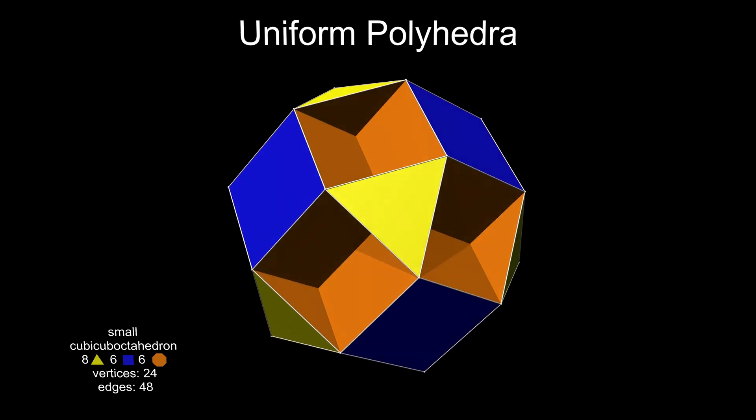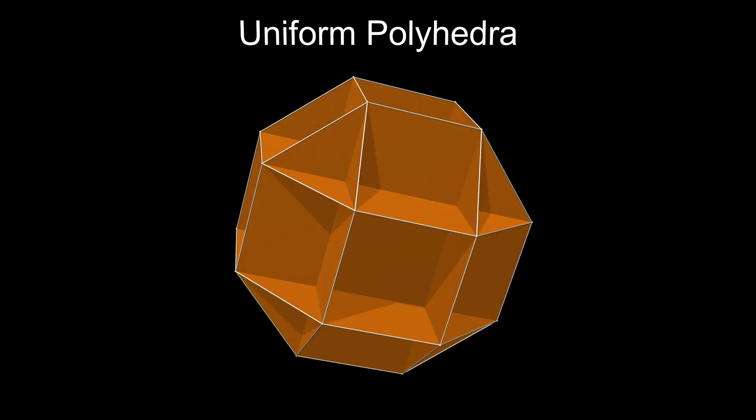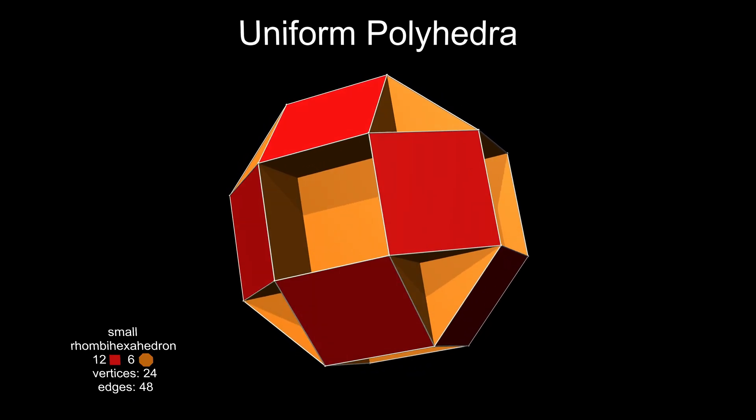Alternatively, the octagons and the other 12 squares can be fitted together to form the small rhombihexahedron.